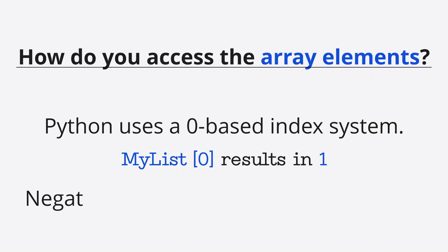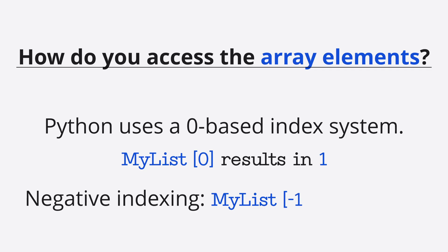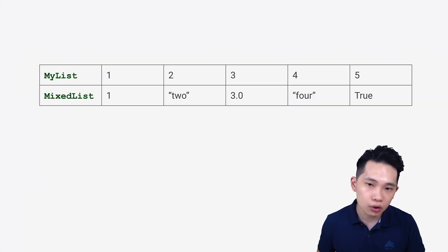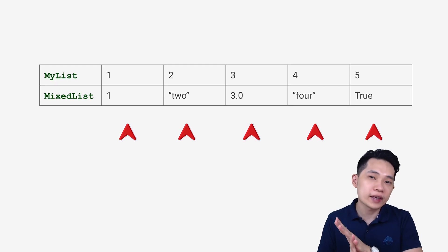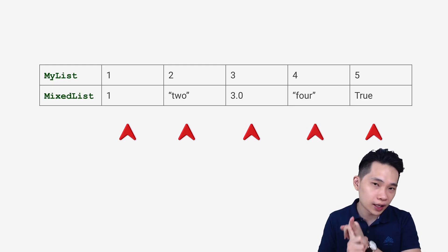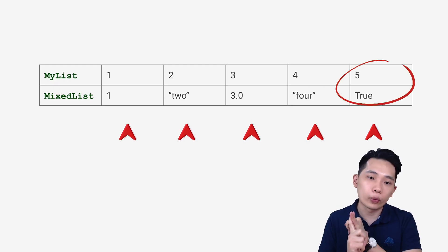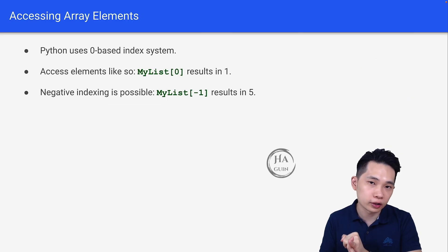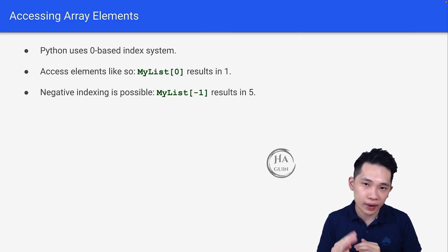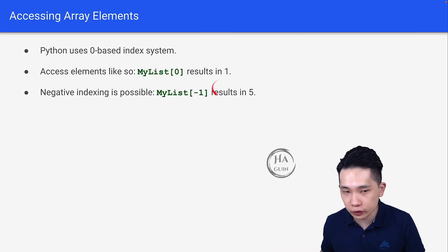Negative indexing is also possible. For example, my_list[-1] results in 5. If my_list stores [1, 2, 3, 4, 5], then 5 is the last element. When you type -1, you are looking at the array from the back. This is how you can use negative indexing.